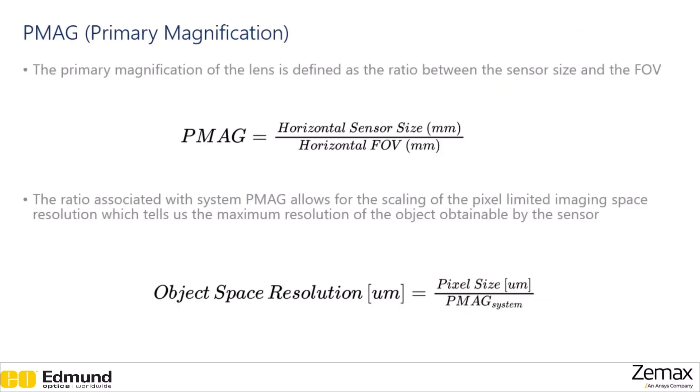The primary magnification of a lens is defined as the ratio between the sensor size and the field of view. So essentially this is telling you if you map your pixel size onto your object, how much area on the object will it take up. So it's very much related to the resolution that's being limited by pixel size. In fact, we can say our object space resolution is the pixel size over the primary magnification of the system.